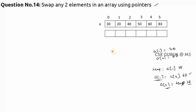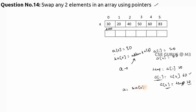If I say a[0] I get 30, and &a[0] gives the address of a[0] — let's say the base address is 2000. If 'a' is an array, then 'a' equals the address of a[0]. Similarly, a+1 equals the address of a[1], and in general, a+k equals the address of a[k].